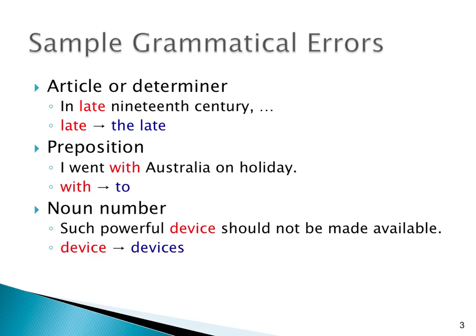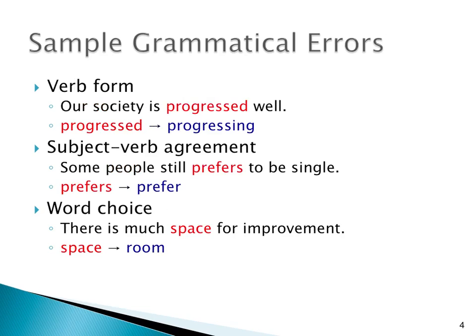Just so that we are clear on what I mean by Grammatical Error Correction, or GEC, here I show a sample of grammatical errors. The first is an article error — 'integral' missing the article 'the'. Next is a preposition error: instead of 'I went with', it should be 'I went to'. The third is a number error — we should say 'such powerful devices' instead of 'device'. The next is a verb form error — the correct form should be 'progressing' instead of 'progressed'. Followed by subject-verb agreement and word choice errors.